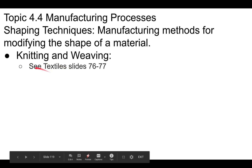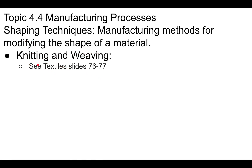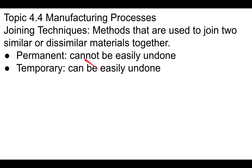Another shaping technique already covered is knitting and weaving — go back to slides 76 and 77 to review that. Now we're talking about joining techniques: a method used to join two similar or dissimilar materials together. There are two types — permanent, which cannot be easily undone, and temporary, which can be easily undone.